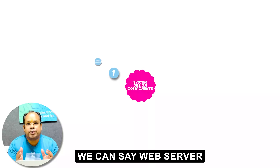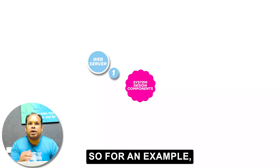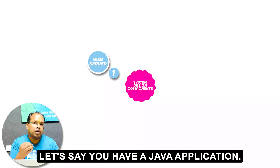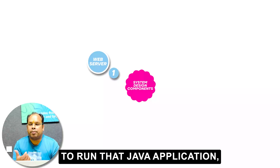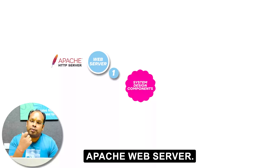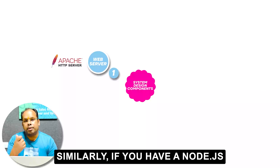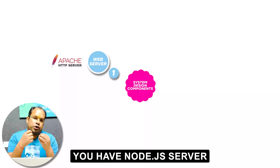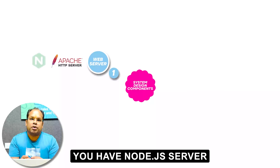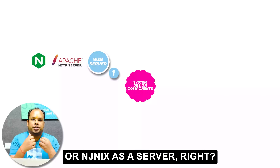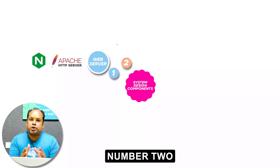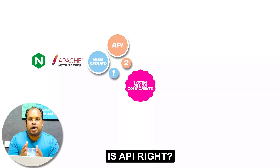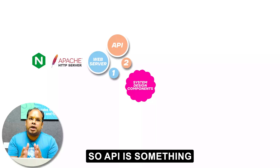Number one is the web server. For example, if you have a Java application, you need an Apache web server to run it. Similarly, if you have a Node.js application, you might use a Node.js server or Nginx as a server.